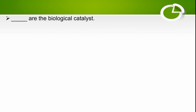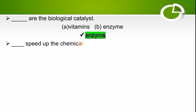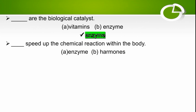Enzymes are the biological catalysts — the right option is enzyme. Enzymes speed up chemical reactions within the body, and this is the main function of enzyme as a biological catalyst.